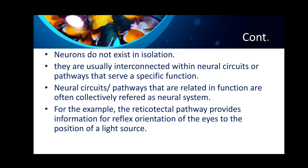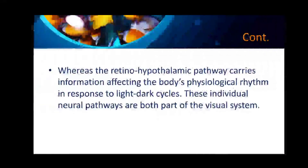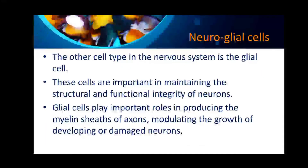For example, the retinotectal pathway provides information for reflex orientation of the eyes to the position of a light source, whereas the retinohypothalamic pathway carries information affecting the body's physiological rhythms in response to the light-dark cycle. These individual neural pathways are both part of the visual system.